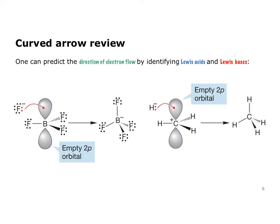How can you predict the direction of electron flow? You can do that by identifying the Lewis acid and the Lewis base in the reaction. Lewis bases are electron-pair donors — this is typically where electrons come from — and Lewis acids are electron-pair acceptors — this is where the electrons go to. We should also be able to identify the highest occupied molecular orbital from which the electrons come in the Lewis base, and the lowest unoccupied molecular orbital into which the electrons go in the Lewis acid. Here are two simple examples: the reaction of a fluoride ion with trifluoroborane.